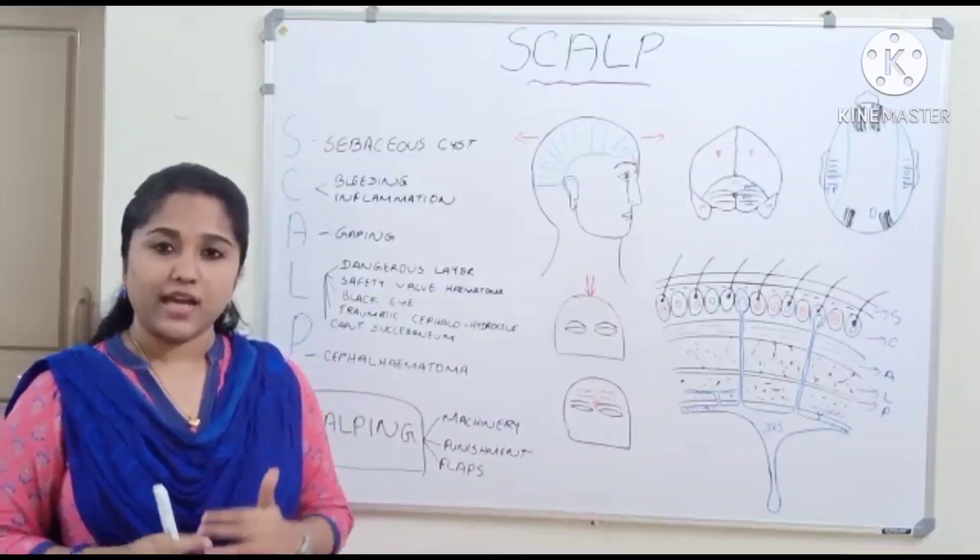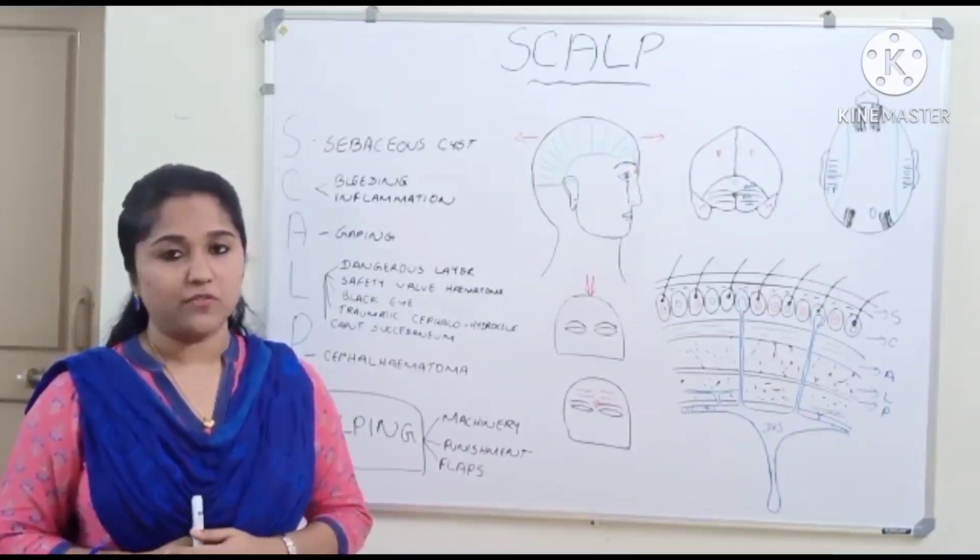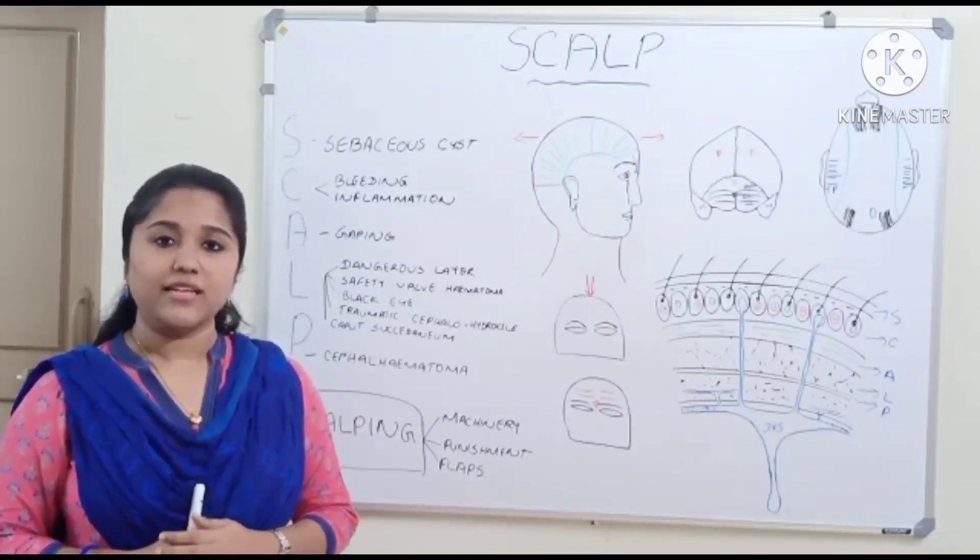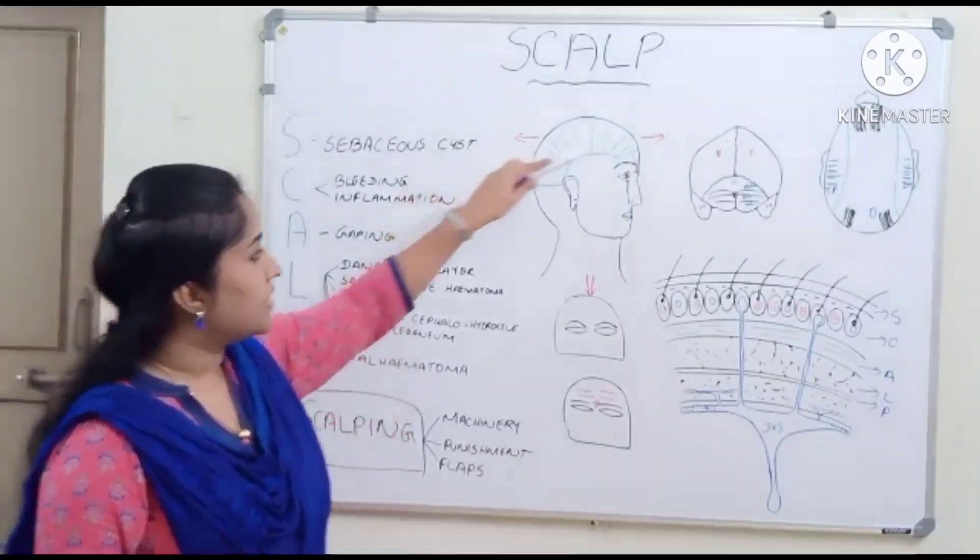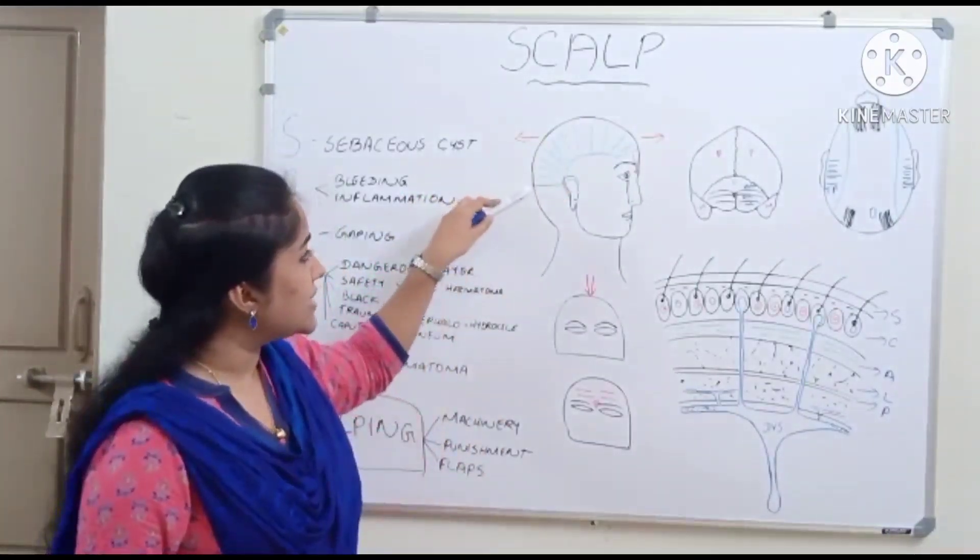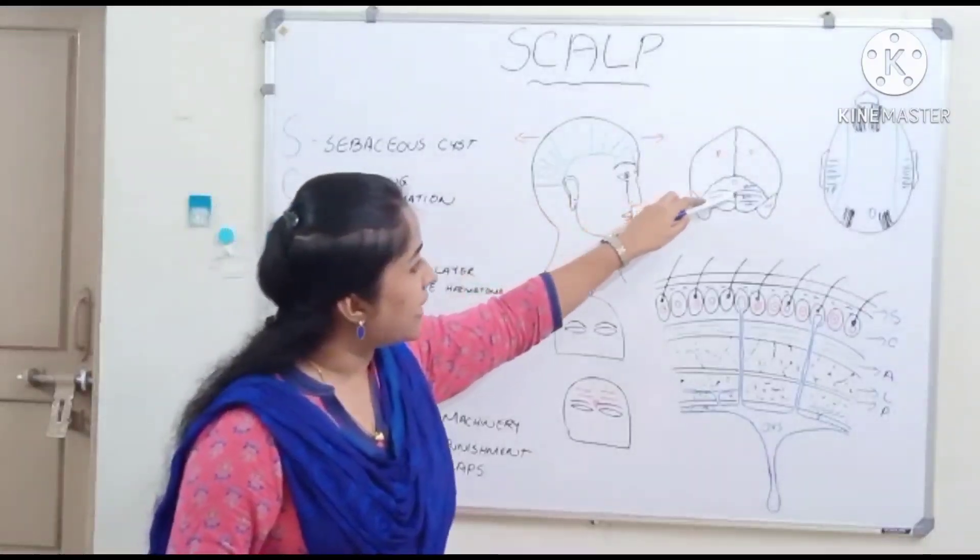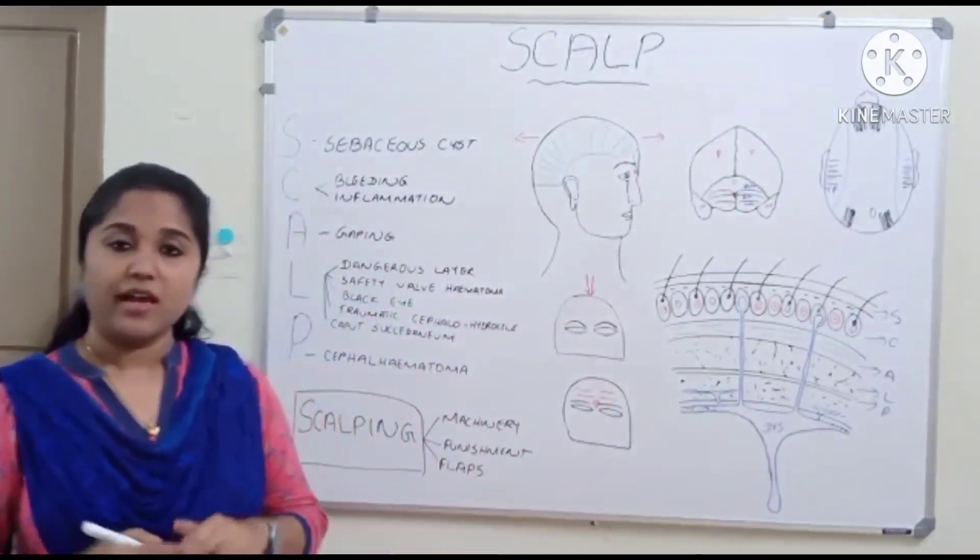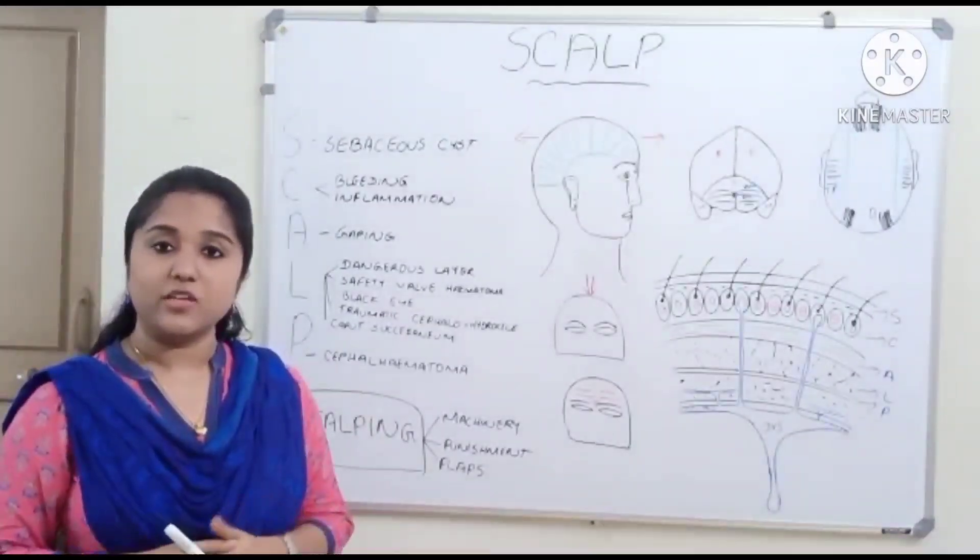As we all know, SCALP is a soft tissue covering of the vault of the skull. It is attached in front to the supra-orbital margin, behind to the external occipital protuberance and superior nuchal line, and on either side to the zygomatic arch.